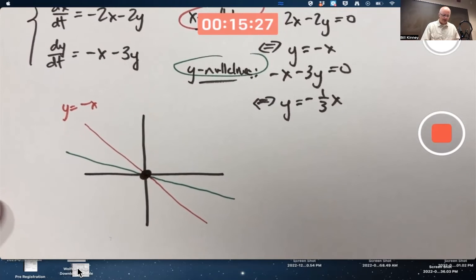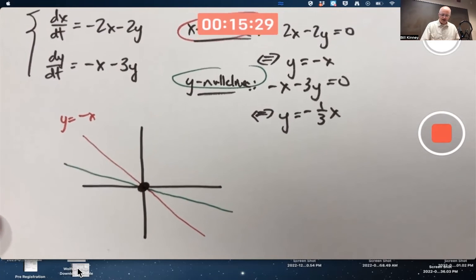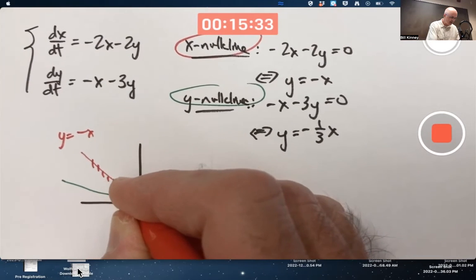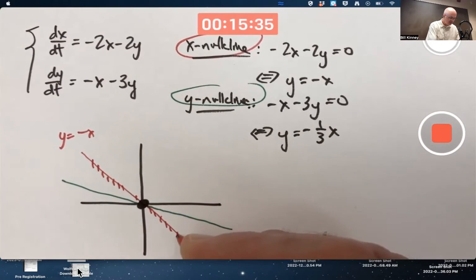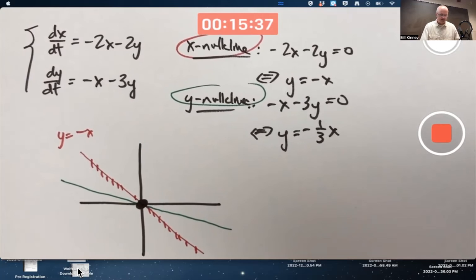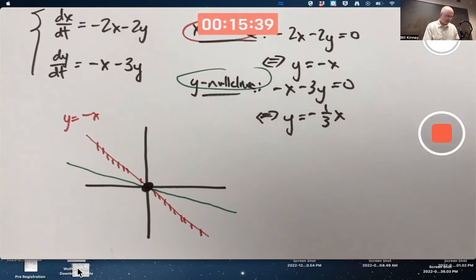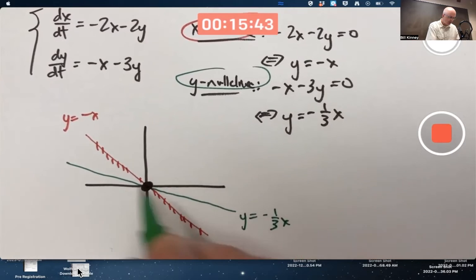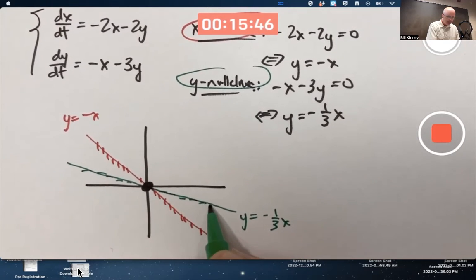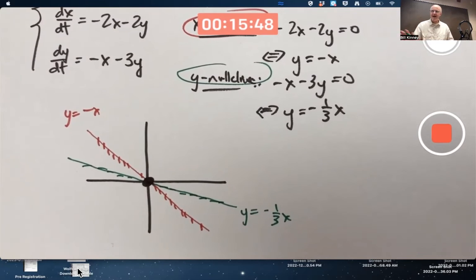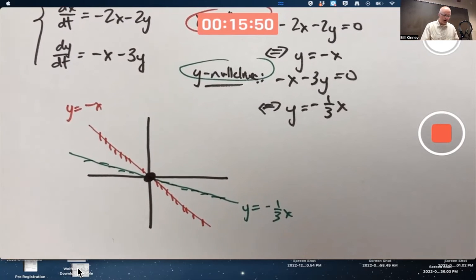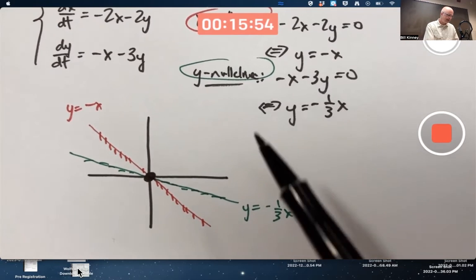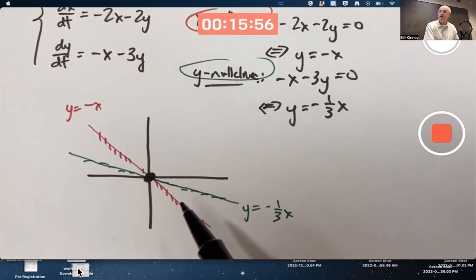We cross the x-null cline with vertical tangents, so draw a bunch of little vertical lines there. Cross the y-null cline, y = -1/3 x, with horizontal tangents. But it's still tricky. That's not enough. You've got to figure out what direction is the vector field pointing in, in between the null clines.